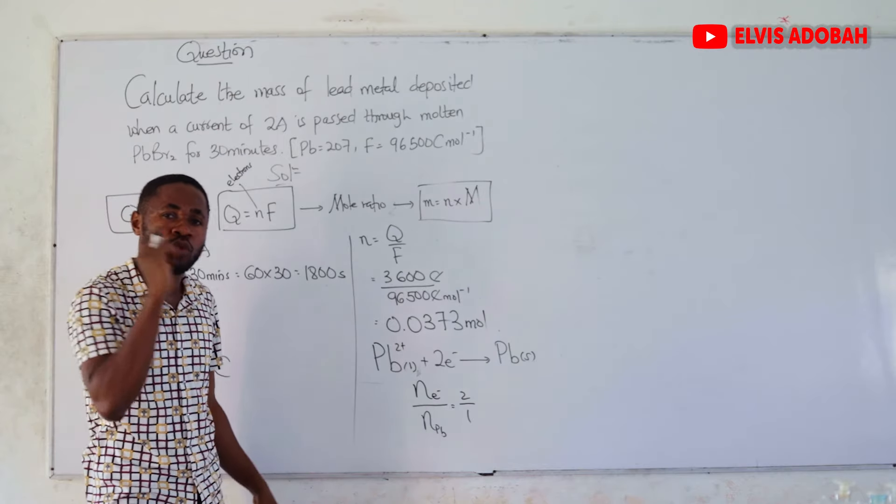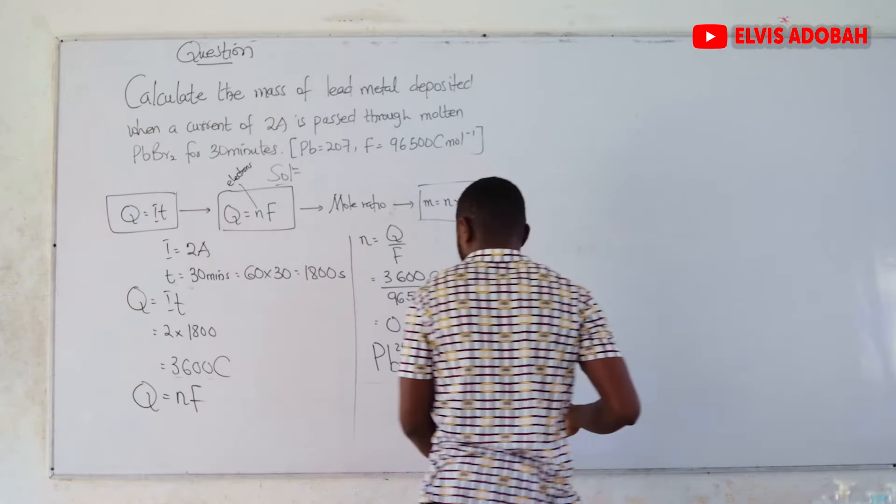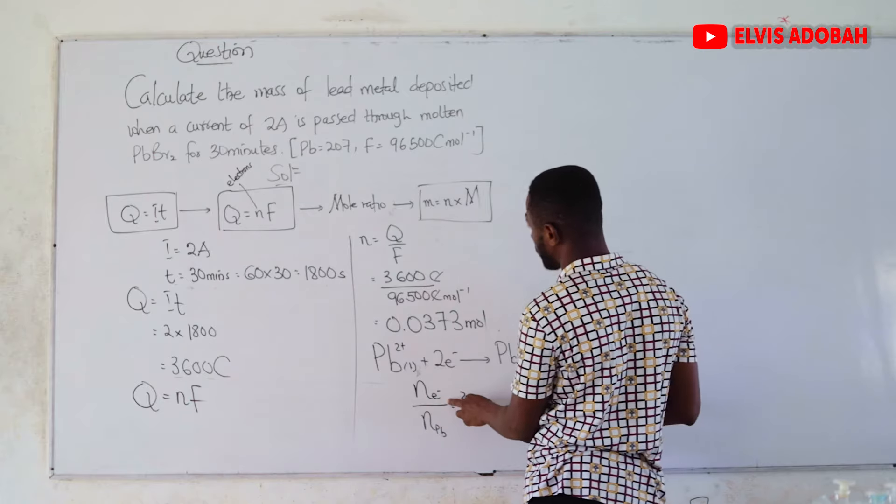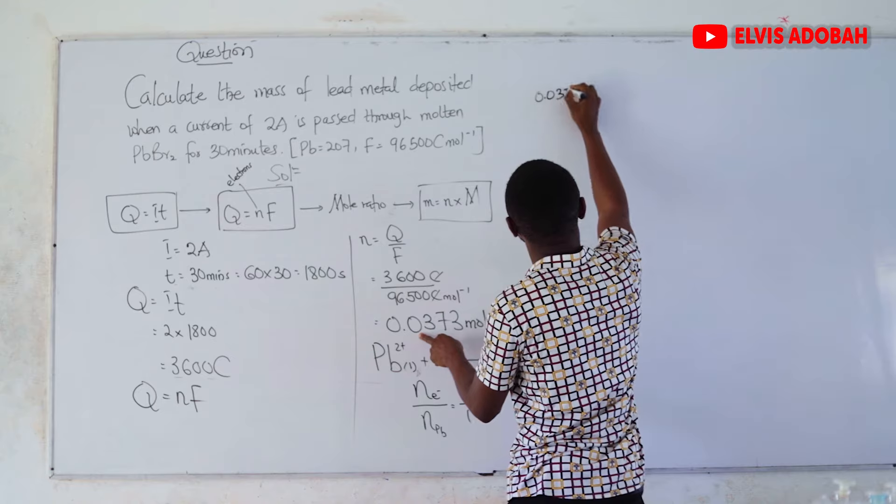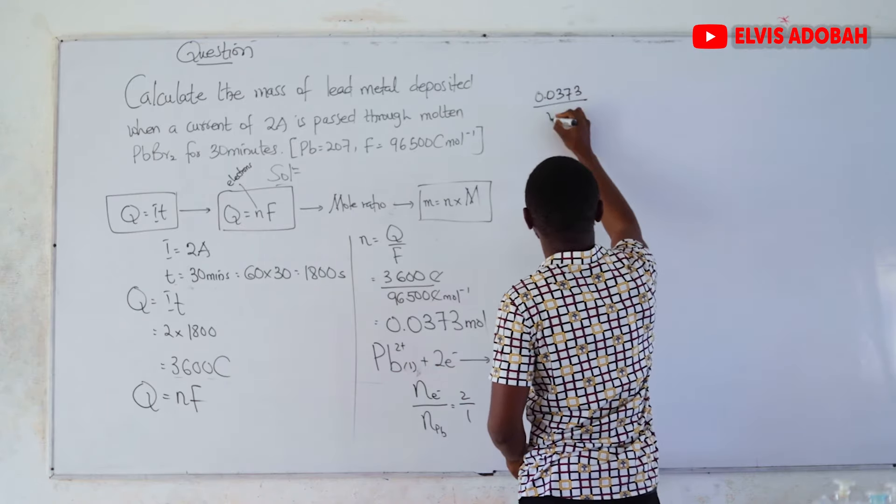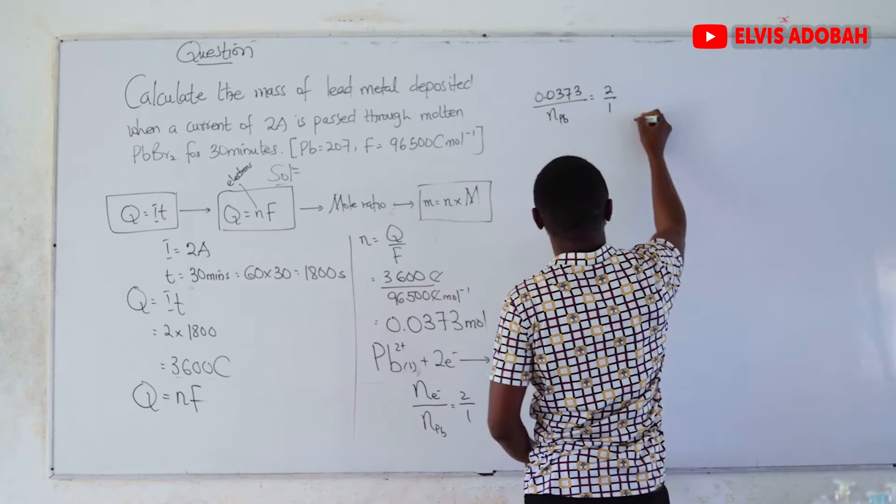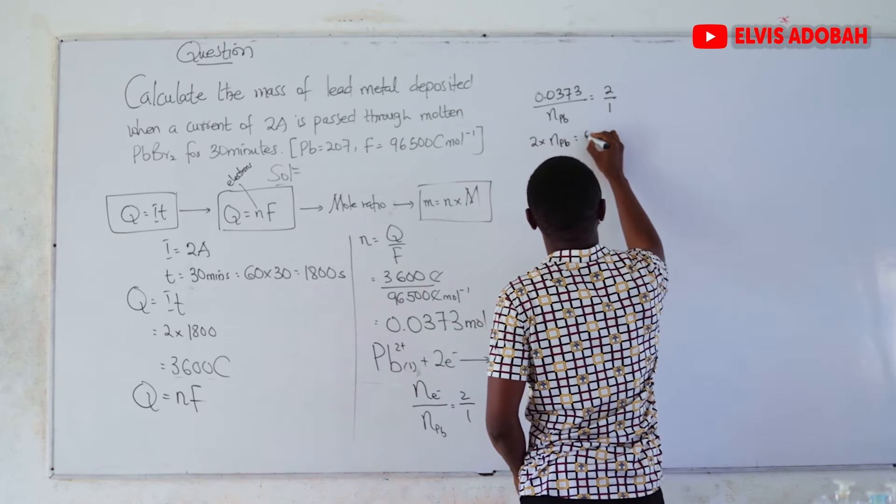Then, we cross multiply. You could also do it, amount of Pb divided by amount of electrons, in which case the fraction will now become 1 out of 2. With this, we can calculate the amount of Pb, because we know the amount of electrons to be 0.0373 moles.